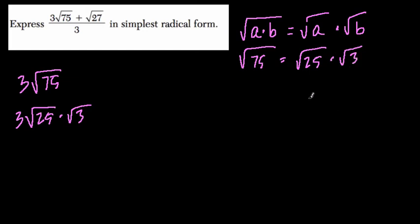Now, if you have a hard time doing this, you can always take the prime factorization, right? 25 times 3 and 5 times 5. And what's nice about the prime factorization is it always helps you find perfect squares.